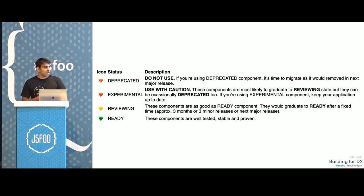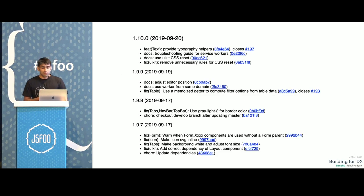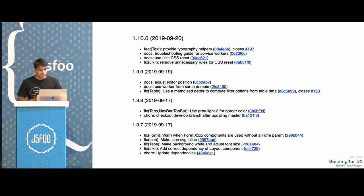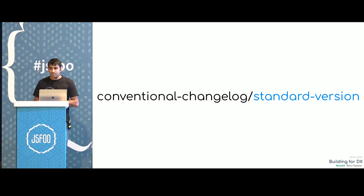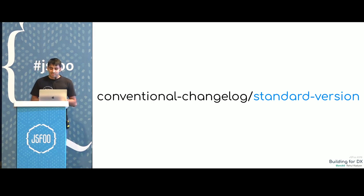It really helped us — people could see what components were available. The next thing we started was publishing changelogs — this was really important. People using our components want to know what's actually changing in a particular version and whether they need to update their applications. Writing changelogs manually was difficult, so we found a tool called Conventional Changelog's Standard Version. It looks at your git commit history and generates a changelog. But this added responsibility: we have to keep our history clean and concise. So we created principles: we accept changes via pull requests only, one pull request proposes only one change.